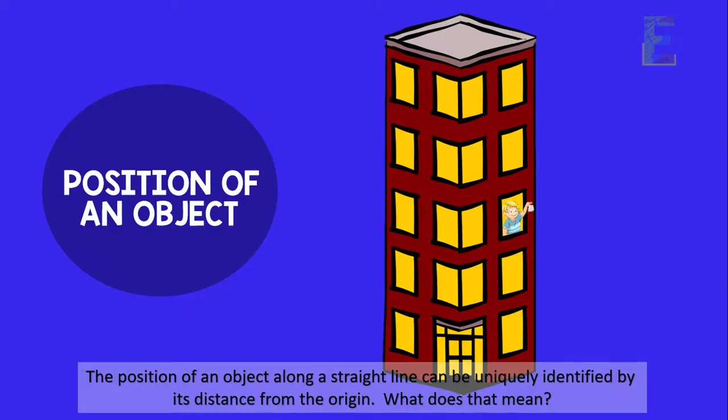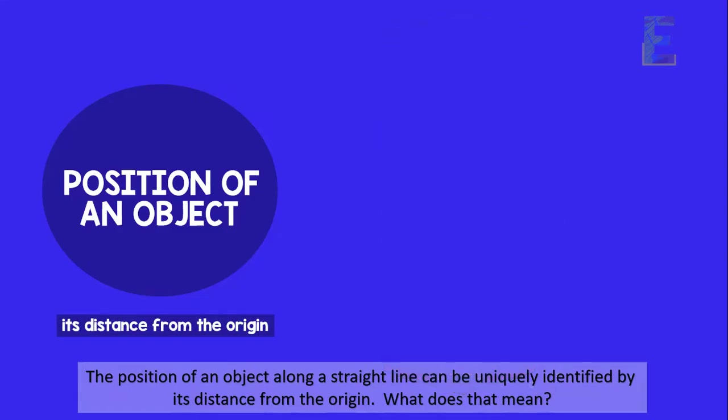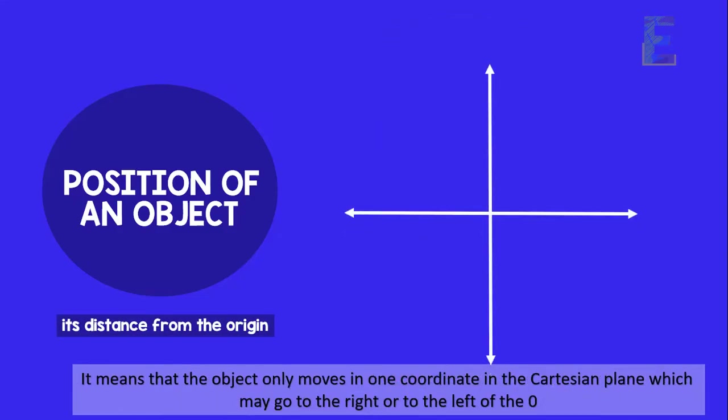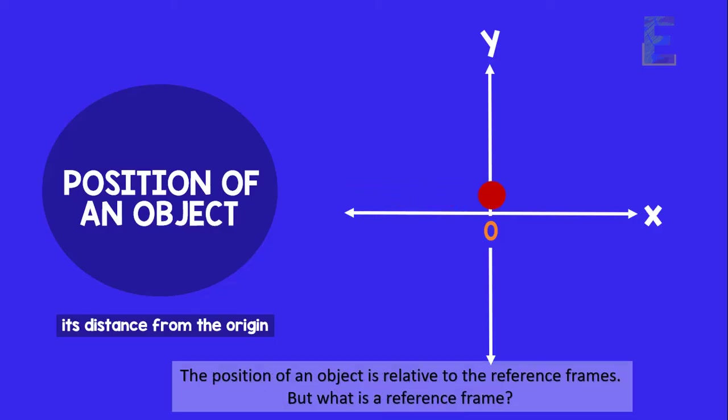The position of an object along a straight line can be uniquely identified by its distance from the origin. It means that the object only moves in one coordinate in the Cartesian plane which may go to the right or to the left of the zero. The position of an object is relative to the reference frames. But what is a reference frame?